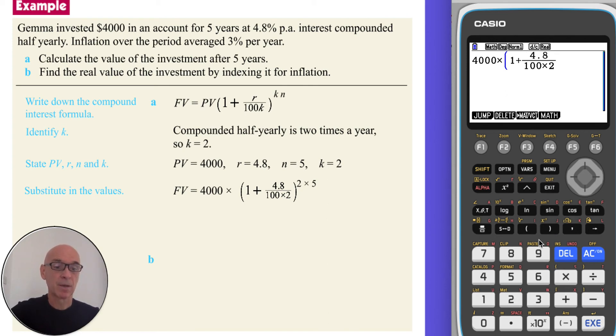right cursor to come up again, and close the bracket, and then raise that to the power of 2 times 5, or you can simply put 10. Press execute to perform the calculation, which gives the final value required.